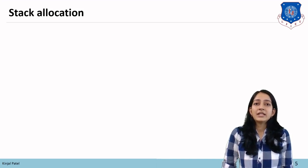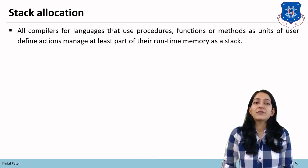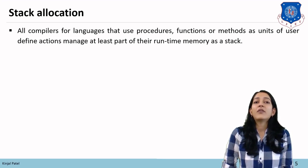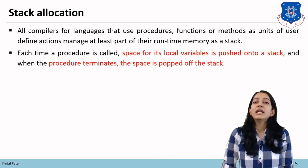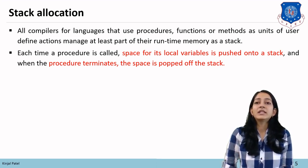The next allocation strategy is stack allocation. All compilers for languages that use procedures, functions, and methods as a unit of user-defined action manage at least part of their runtime memory as a stack. Each time a procedure is called, the space for its local variables is pushed onto the stack, and when the procedure terminates the space is popped off the stack.